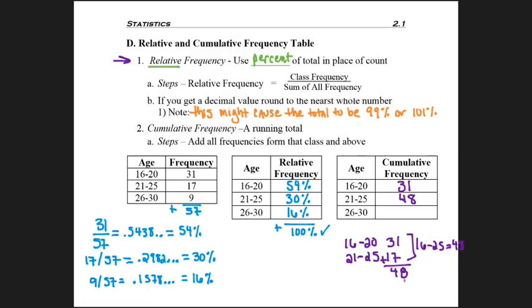Now if I said, keep your hands in the air, and if you're age 26 to 30, raise your hand, then we know that nine more hands would go in the air for a grand total of 57 hands. Everybody's hands would be in the air. So the cumulative frequency is kind of like a running total.